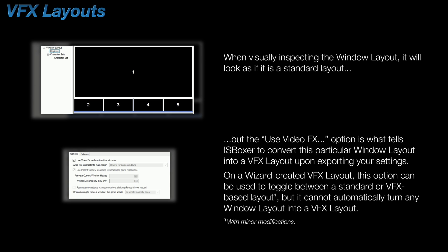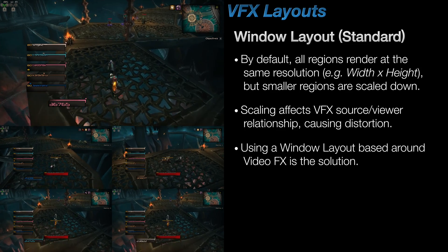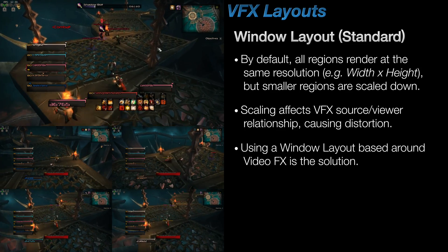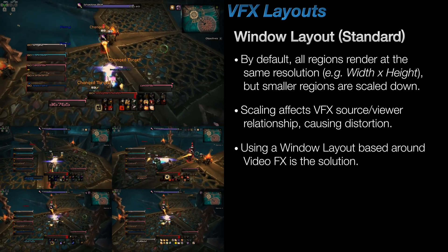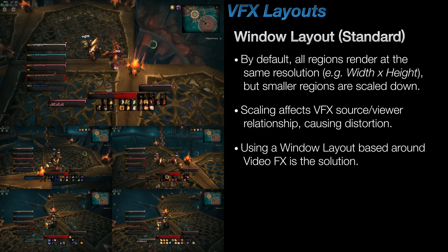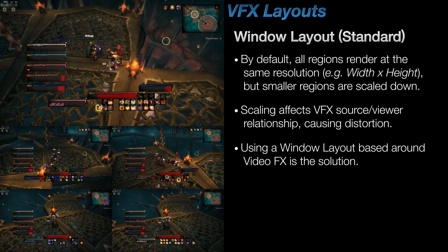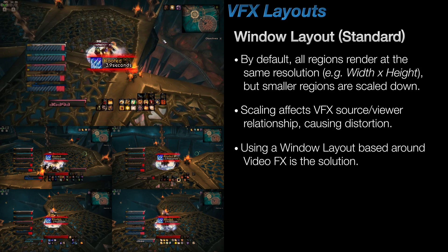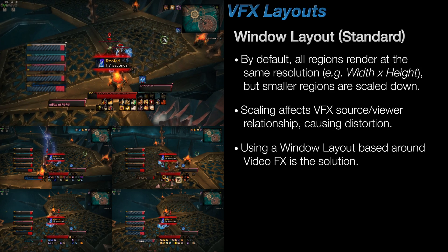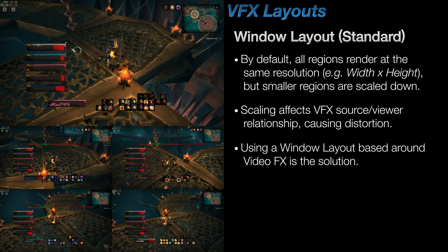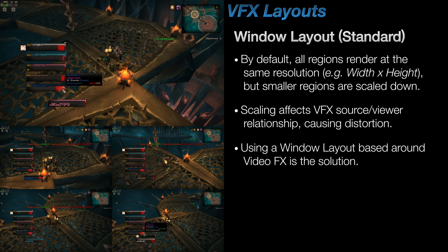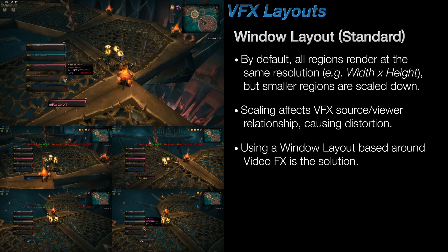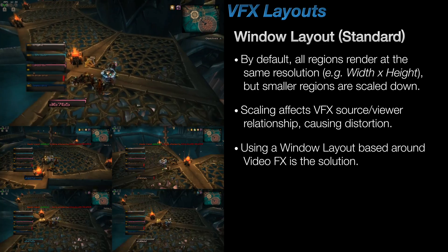So let's talk about how a VFX layout differs from a standard window layout and why it's recommended to use one when using the video effects feature of IS Boxer. When using a standard window layout, even with all of the game clients rendering at the same internal resolution, they're still being scaled down when filling in the smaller regions, and this affects them visually. When using video effects, the scaled-down source ends up heavily pixelated when looking at it through the viewer on the screen that you're focused on. While this doesn't hinder the functionality of video effects, it certainly doesn't look appealing, and sometimes being able to see what you're doing is necessary.